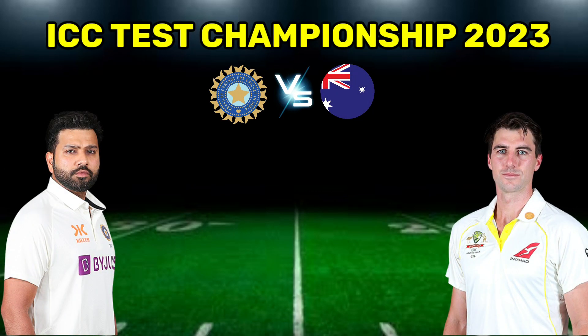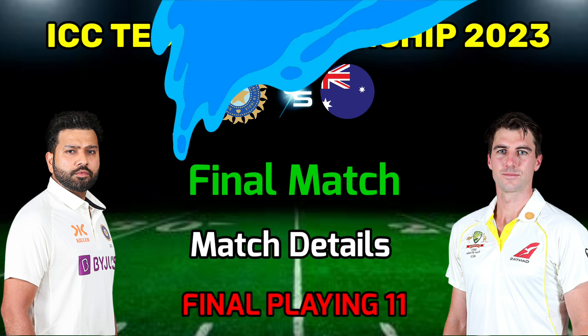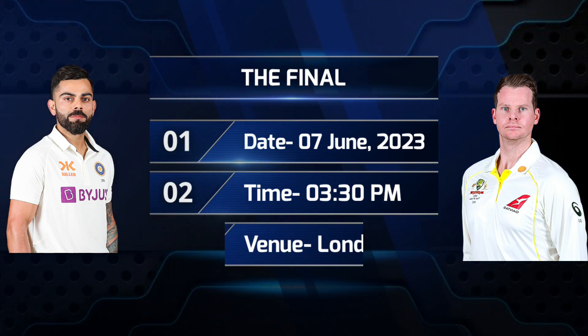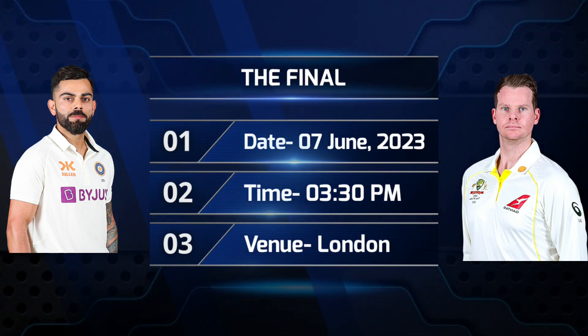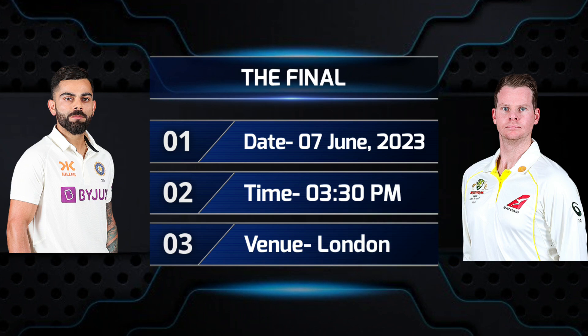ICC Test Championship 2023 Final Match: India vs Australia. Match details — Date: 7th June 2023, Timing: 3:30 PM Indian Standard Time, Venue: The Oval, London.